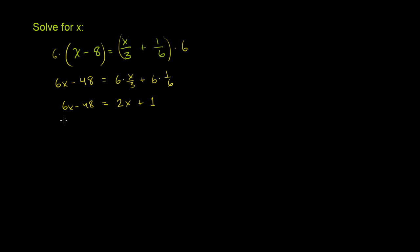So let's subtract 2x from both sides. We want to get rid of this 2x here. That's why I'm subtracting the 2x. So let's subtract 2x from both sides. And on the right-hand side, I have 2x plus 1 minus 2x. Those cancel out. That was the whole point. So I'm left with just this 1 over here.